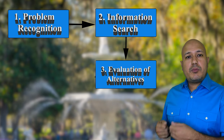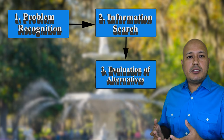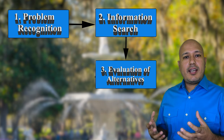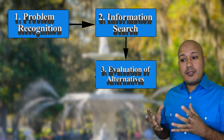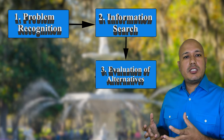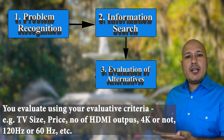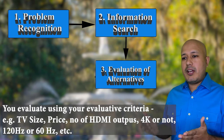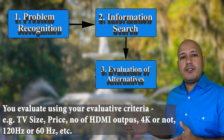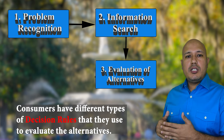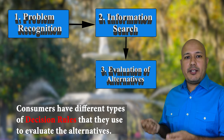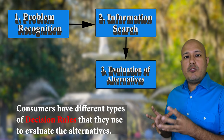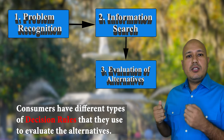My consideration set now consists of only two alternatives. I'll spend more time and effort thinking about what are the differences and similarities between these two alternatives and what will give me the most value. Think about your own process — whenever you bought something, it narrows down to a few choices. That number of few choices is the consideration set. There are different rules that consumers might apply — just like I had 75 inches as my minimum, so anything below 75 inches is not considered at all. Other consumers might have their own rules as well, which they apply during the evaluation of alternatives stage.